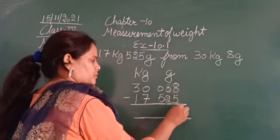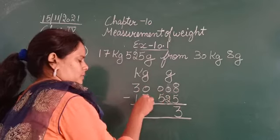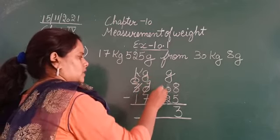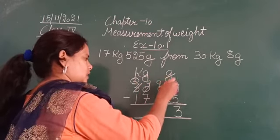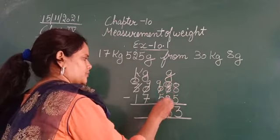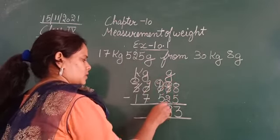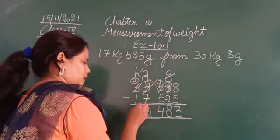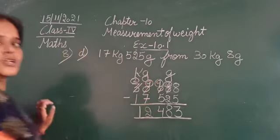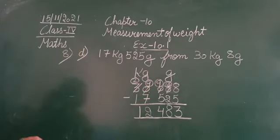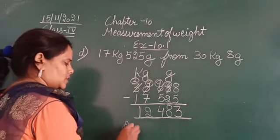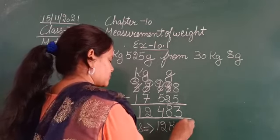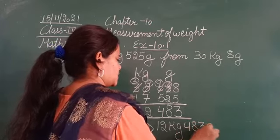So let's subtract and find the answer. 8 minus 5 is 3. 0 minus 2, 0 minus 5, 0 minus 7 — borrow from here, that is 2. This is 9, and this is 10. 10 minus 2 is 8. 9 minus 5 is 4. 9 minus 7 is 2. 2 minus 1 is 1. So the answer is 12 kg 483 grams.